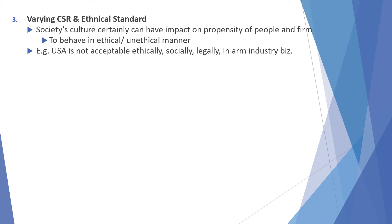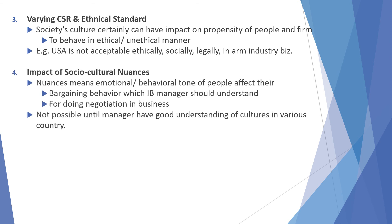Society's culture can certainly have an impact on the propensity of people and firms to behave in ethical or unethical manner. For example, in the US it is not ethically, socially, or legally acceptable in industry and business. The impact of socio-cultural nuances means the emotional and behavioral tone of people affects their bargaining behavior, which the IB manager should understand for doing negotiation in business. This is not possible unless the manager has a good understanding of the culture in various countries.